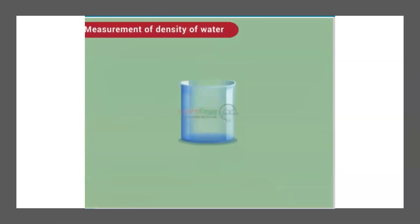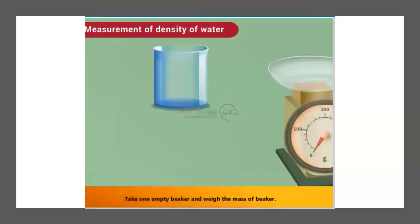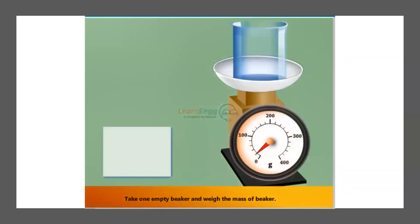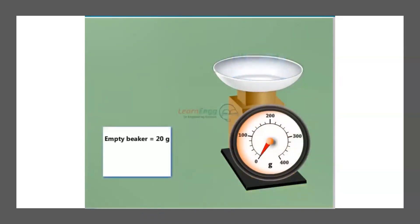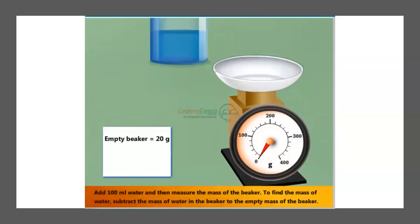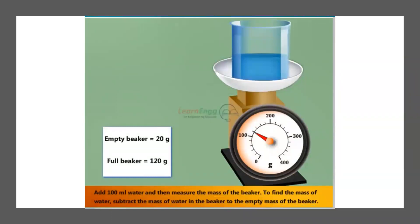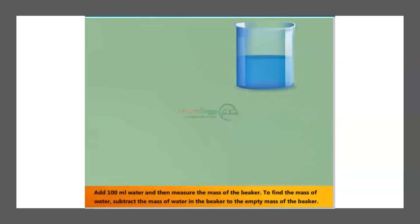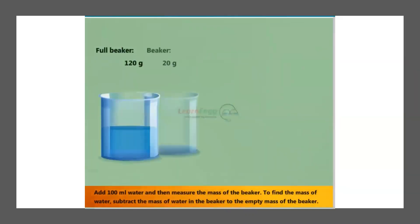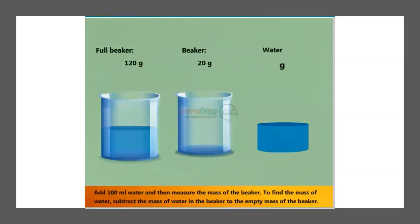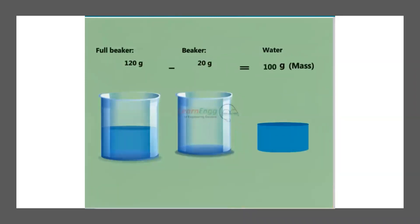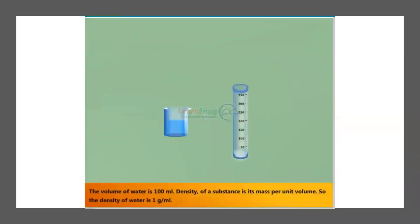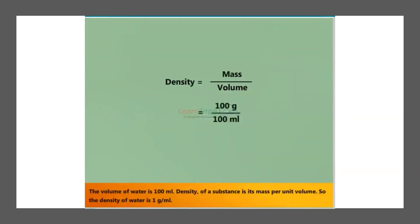To measure the density of water: take one empty beaker and weigh its mass — let it be 20 grams. Add 100 ml of water and measure the mass of the beaker — let it be 120 grams. To find the mass of the water, subtract the empty beaker mass: 120 grams minus 20 grams equals 100 grams. The volume of water is 100 ml, so the density of water is 1 gram per milliliter or 1000 kg per meter cube.